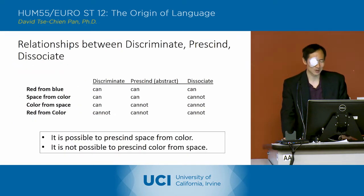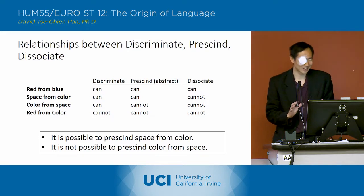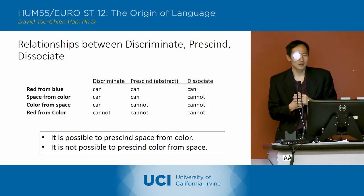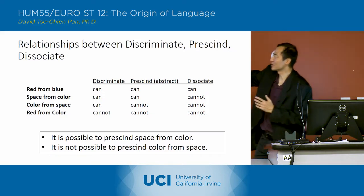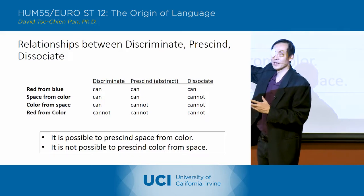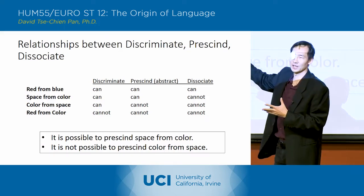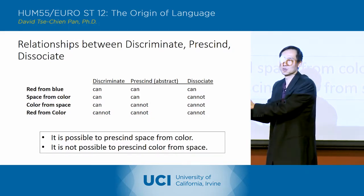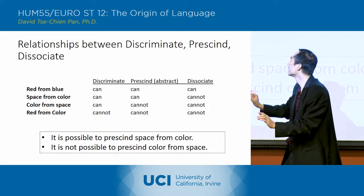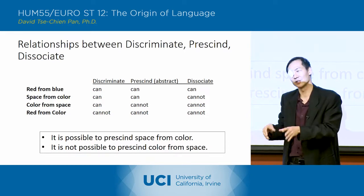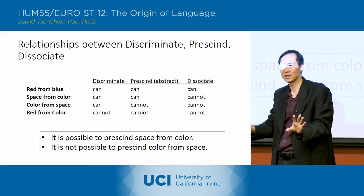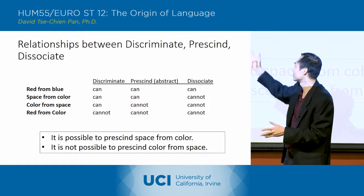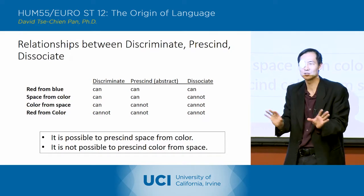This is all confusing, but I have a chart that I made. He gave us examples of red and blue, and space and color. Discriminate means to separate the meaning of two things. You can separate red from blue — you can understand there's red and there's blue, and discriminate the meanings. You can also discriminate the meaning of space from the meaning of color, and color from space — we can understand those are two different meanings.